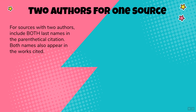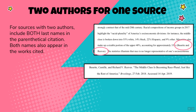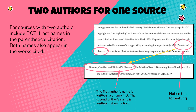When a source is written by two people, include both last names in the parenthetical citation. Both names also appear in the Works Cited page. This might seem to contradict the guiding principle — you could argue all you really need is the first name — but consider the point of view of the second author: wouldn't you want your name mentioned if you co-wrote something? Notice the formatting: there's no comma after the first name. In the Works Cited entry, the first author's name is written last name first, while the second author's name is written first name first.